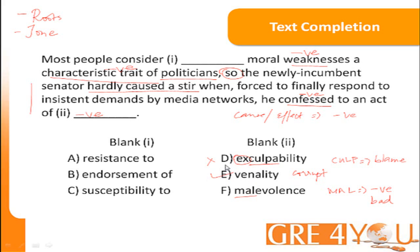Now going back to the first blank: blank moral weaknesses. Resistance to moral weaknesses would be something good — resistance to something bad would be something good — so we don't want something good. Endorsement of: when you endorse something, you support or advertise it, so somebody with a moral weakness is hardly likely to advertise it. Susceptibility — susceptible means vulnerable to — so vulnerability to moral weaknesses means giving in to moral weaknesses. Therefore, C, susceptibility, is the best choice for blank one.